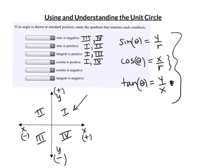Where is cosine negative? Cosine is x over r, and x is negative in quadrants 2 and 3. Where is tangent negative? In quadrant 2, y is positive but x is negative — one negative makes it negative. In quadrant 4, x is positive but y is negative — again one negative makes it negative. This all comes down to understanding which quadrants make x and y positive or negative.